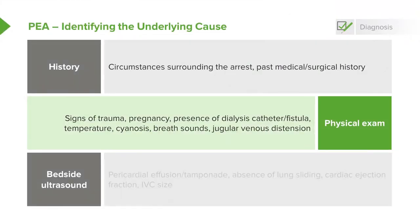For physical exam, it's especially important when you don't have a good history — which in many cardiac arrests you won't. If the patient has signs of physical trauma, think more about hemorrhage or tension pneumothorax. If the patient is pregnant, think about pulmonary embolism. If they have a dialysis catheter, think about hyperkalemia. Physical findings can give you clues to narrow your differential and prioritize treatments to help the patient with PEA.